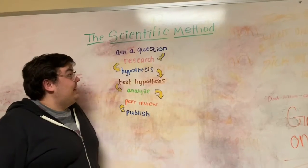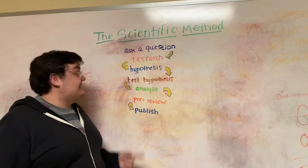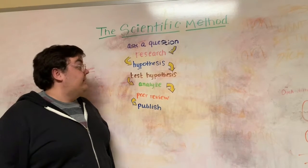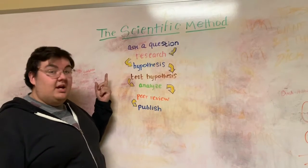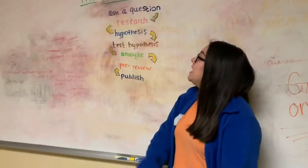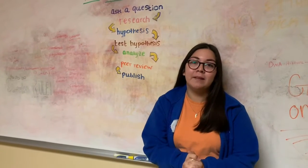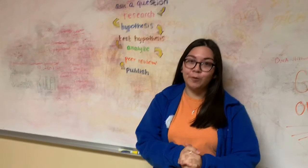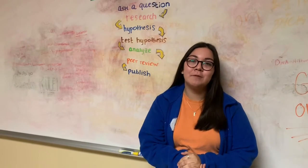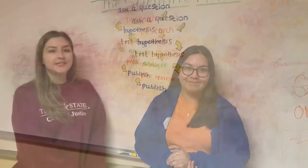Just for an overview, today we went over the scientific method. First, we asked a question on what liquid would make a plant grow stronger. Second, we conducted some research to find other studies that could help us form our hypothesis. Our hypothesis was that water was going to help our plant grow taller, and then our test hypothesis was pouring Dr. Pepper into plant A.